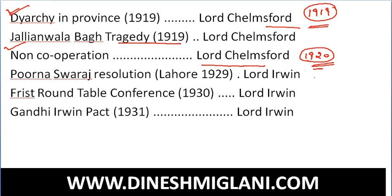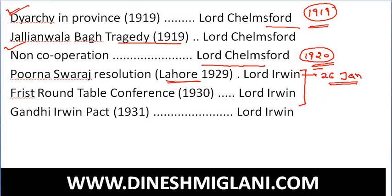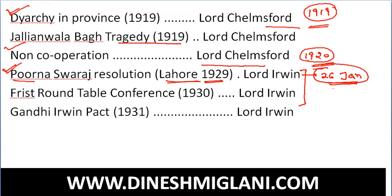The Purna Swaraj resolution was passed at the time of Lord Irwin in 1929 in Lahore, where it was decided that every year on 26th January would be treated as complete independence day. Before 1929, the Congress was just seeking dominion status or other concessions, but in 1929 it was decided that complete freedom was the single goal of Congress, and from that year 26th January was started to be celebrated as Independence Day.